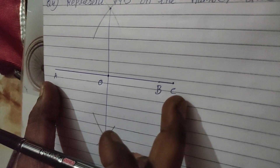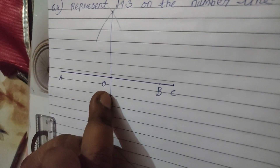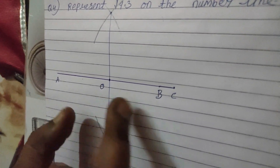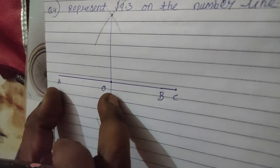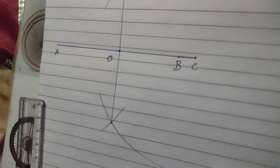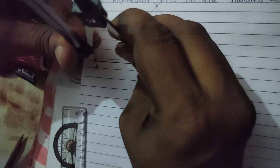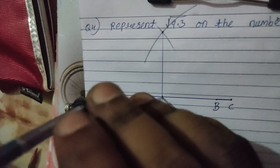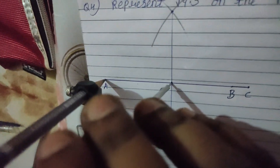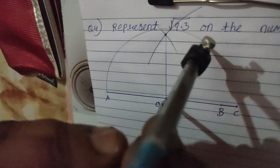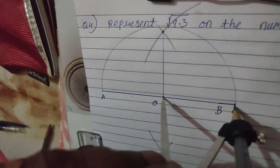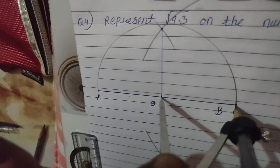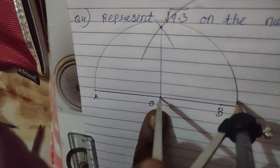AC was the diameter, so O is the midpoint and center. AO will be the radius. Now take the compass with O as center and AO as radius — or OC, it is the same — and draw only the upper semicircle. The semicircle should exactly touch point C, confirming O is the correct midpoint.